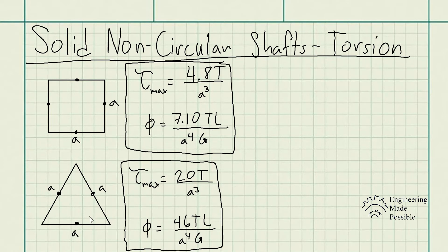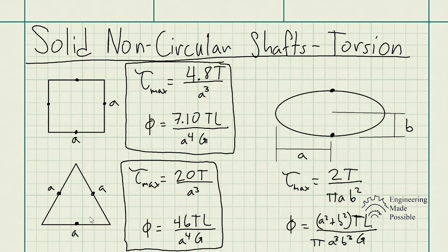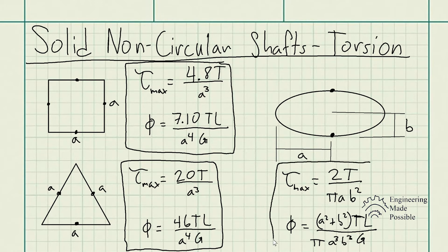There's also an elliptical cross-sectional area. For the elliptical cross-sectional area, the maximum shear stress is equal to 2 times the torque divided by pi and the dimensions A, B squared. And the angle of twist is A squared plus B squared times the torque times the length of the shaft divided by pi, A cubed, B cubed, and the shear modulus. These are the equations for the maximum shear stress and angle of twist for the respective cross-sectional area.